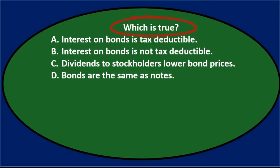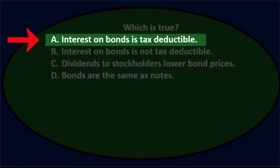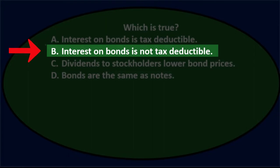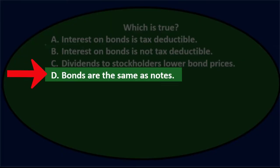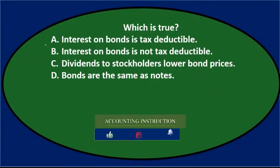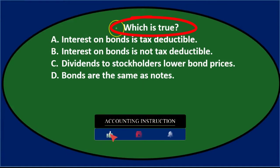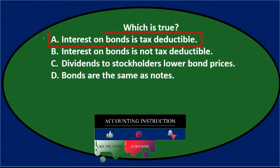First question: which is true? A) interest on bonds is tax deductible, B) interest on bonds is not tax deductible, C) dividends to stockholders lower bond prices, or D) bonds are the same as notes.